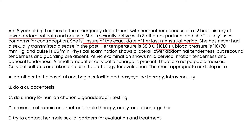Physical exam shows bilateral lower abdominal tenderness; rebound tenderness and guarding are absent. Pelvic exam shows mild cervical motion tenderness and adnexal tenderness, with a small amount of cervical discharge. The symptoms are almost identical to pelvic inflammatory disease, but one sentence leads you to think of ectopic pregnancy: she is unsure of her last menstrual period. That makes you suspect ectopic pregnancy, even though she may well have PID.